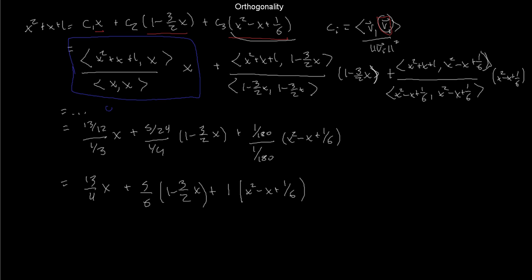What's outlined here as the first term is the orthogonal projection of x² + x + 1 onto x. We're going to talk more about what that means geometrically. In essence, with an orthogonal basis, to find coordinates you project onto each member of the basis — and we'll see more of that very soon.